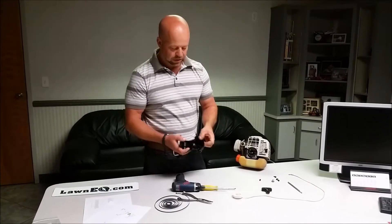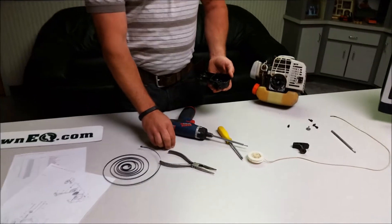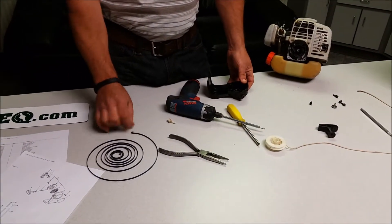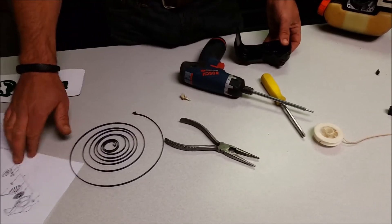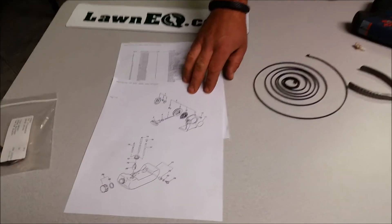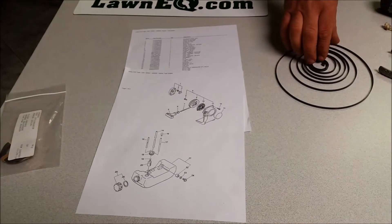Alright, so I've got the starter housing cleaned out and the starter spring cleaned. And we're going to start putting this back together to see what happens. For instance, if this starter spring was bent or broke, you just need to go to LawnEQ and look up your parts. It might be number 10 here. I brought a spring here just in case. But we'll go ahead and put this back together.